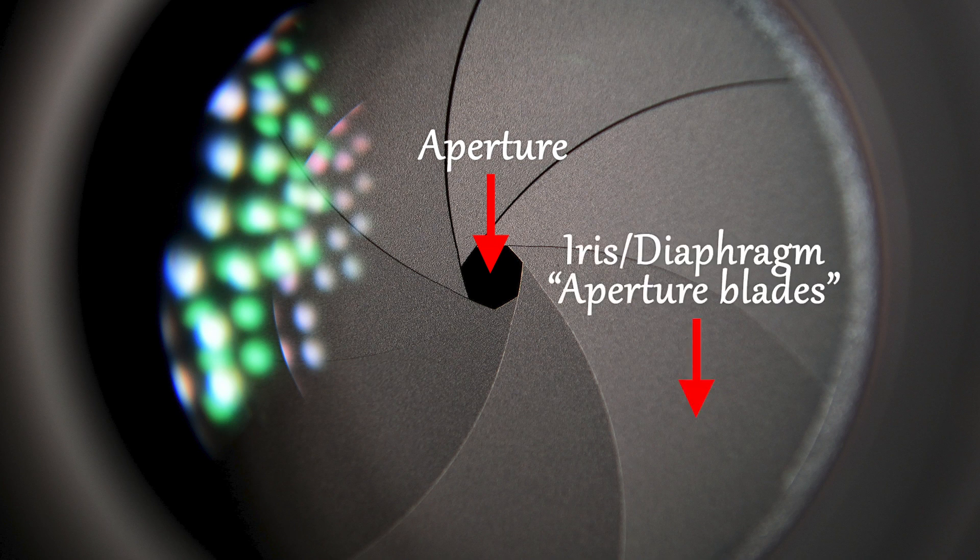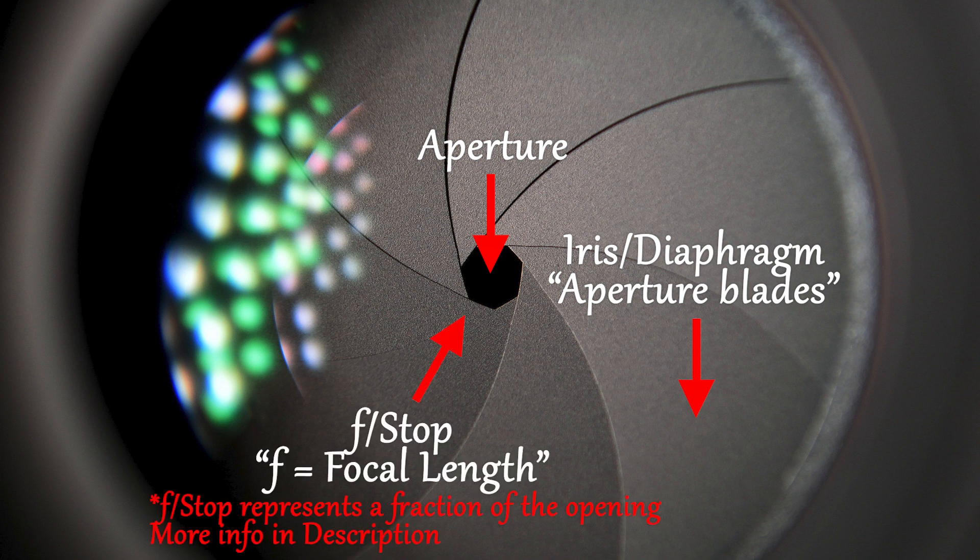The iris, also referred to as a diaphragm, is the mechanism that adjusts the aperture — also referred to as aperture blades, as you might have heard. F-stop is the measurement of that opening.